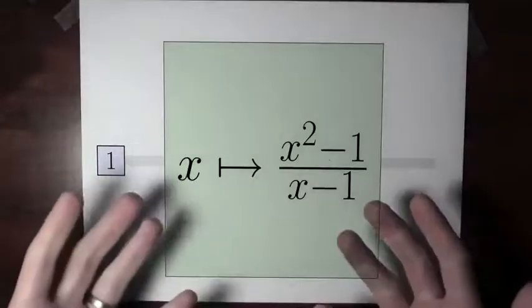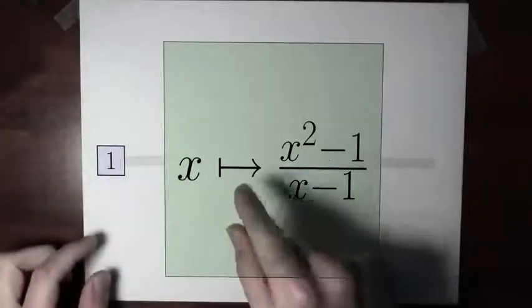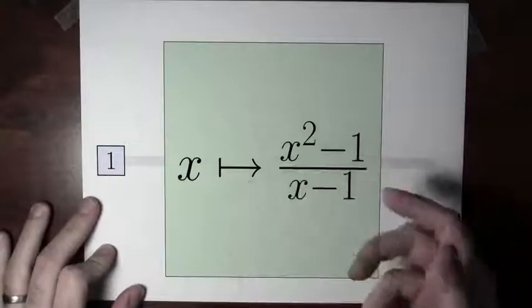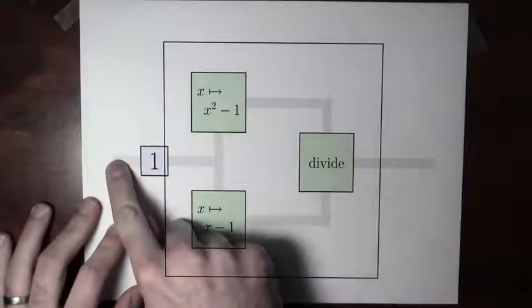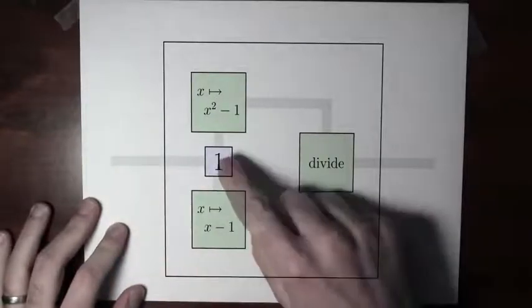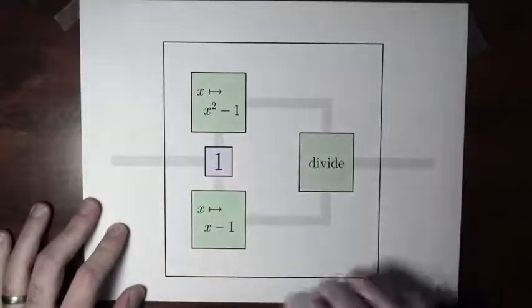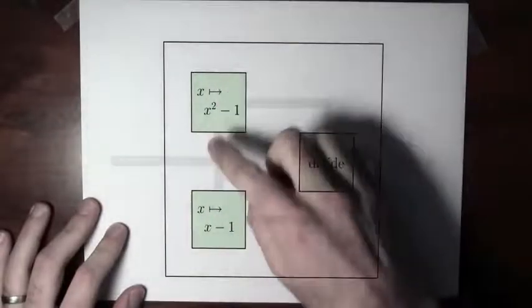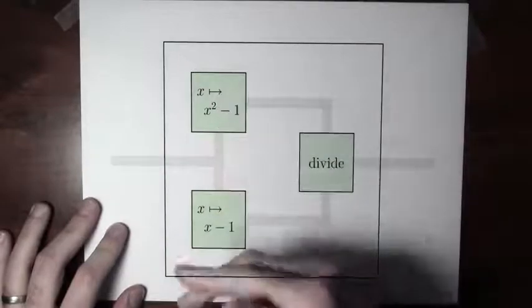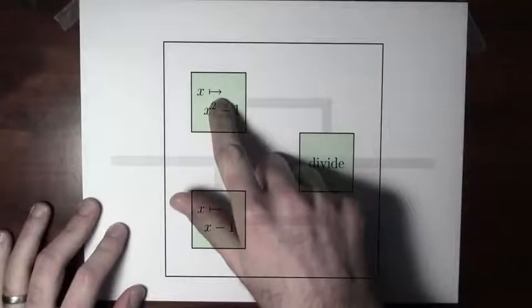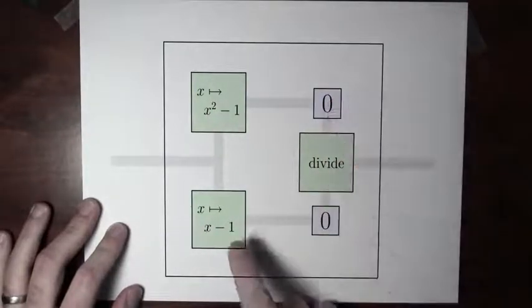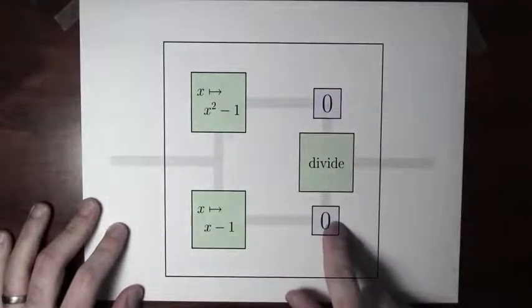I evaluated the function at 3, but let's try to evaluate the function at 1 instead. What happens when we plug in the number 1? I open up the function: 1 squared minus 1 is 0 in the numerator, and 1 minus 1 is 0 in the denominator. Now I've got 0 and 0 going into the division.